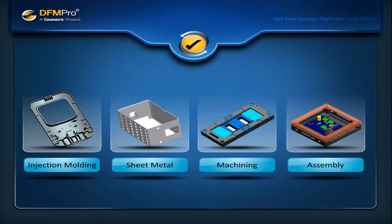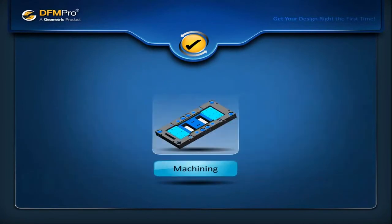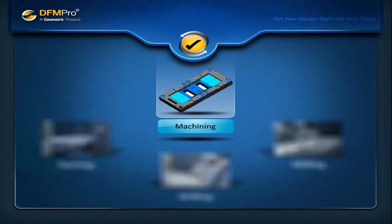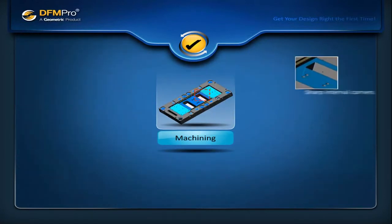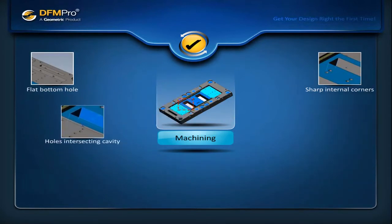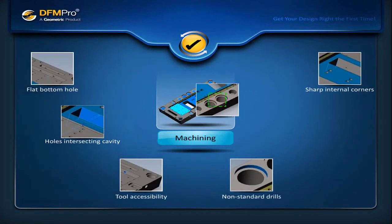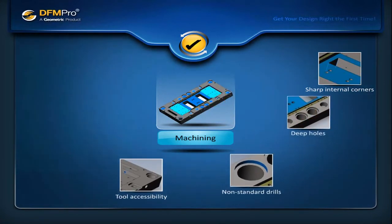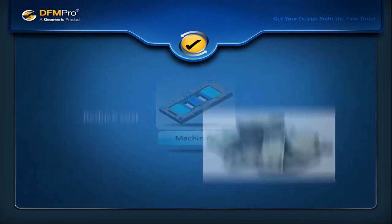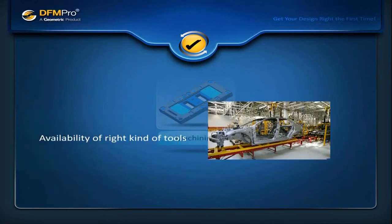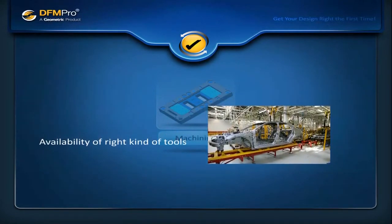DFM Pro addresses best practices in machining like turning, drilling and milling. It detects problems such as sharp internal corners, flat bottomed holes, holes intersecting cavities, issues related to tool accessibility, non-standard drills, deep holes and many more. Addressing these issues at the design stage helps reduce cost and ensures ease of manufacturing and availability of the right kind of tools when the design is sent for manufacturing.